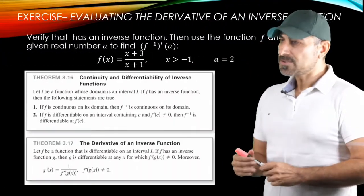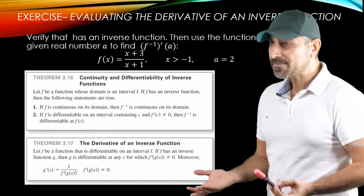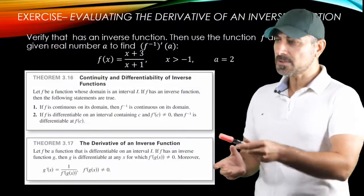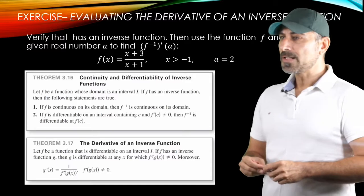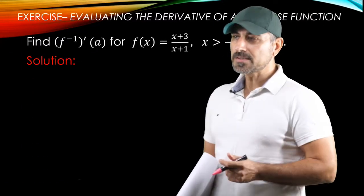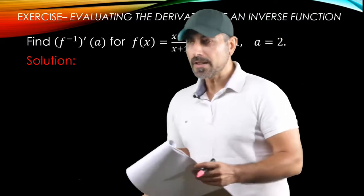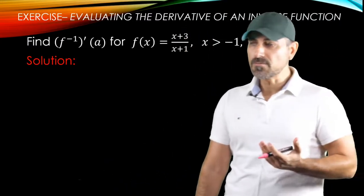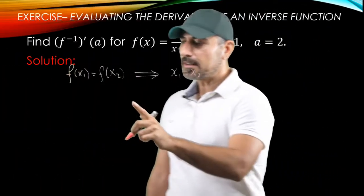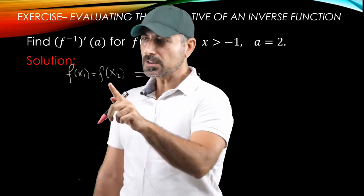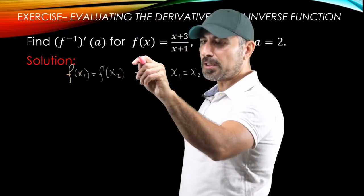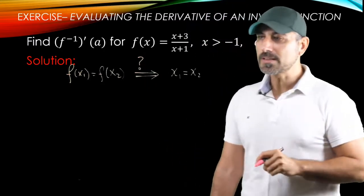Next, we check if f has an inverse, then verify f is differentiable, and use the formula to find the derivative of the inverse function. To verify f has an inverse, we check the one-to-one property: if f(x₁) equals f(x₂), that should imply x₁ equals x₂.